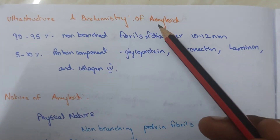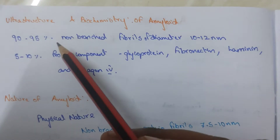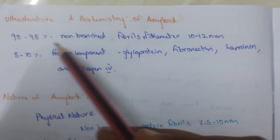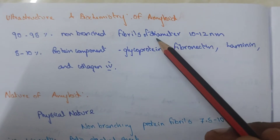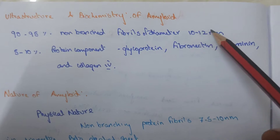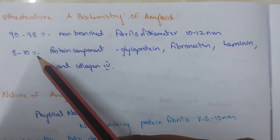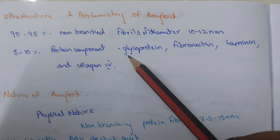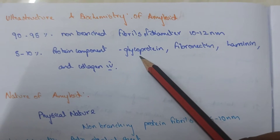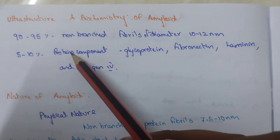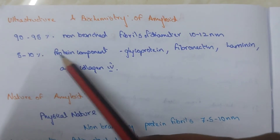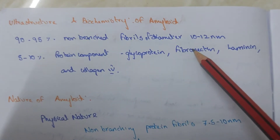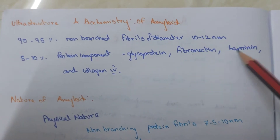Regarding the ultrastructure and biochemistry of amyloid: it contains 90 to 95 percent non-branched fibers of diameter 10 to 12 nanometers, and 5 to 10 percent protein compound of glycoprotein.